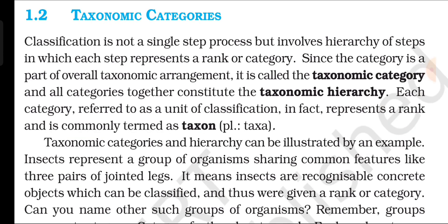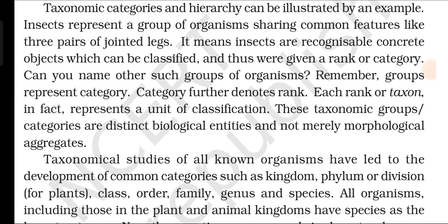Taxonomic categories: Classification is not a single-step process, but involves a hierarchy of steps, in which each step represents a rank or category. Since the category is part of the overall taxonomic arrangement, it is called the taxonomic category, and all categories together constitute the taxonomic hierarchy. Each category, referred to as a unit of classification, represents a rank and is commonly termed a taxon. For example, insects represent a group of organisms sharing common features like three pairs of jointed legs — insects are recognizable concrete objects which can be classified and given a rank or category. Groups represent category; categories further denote rank.